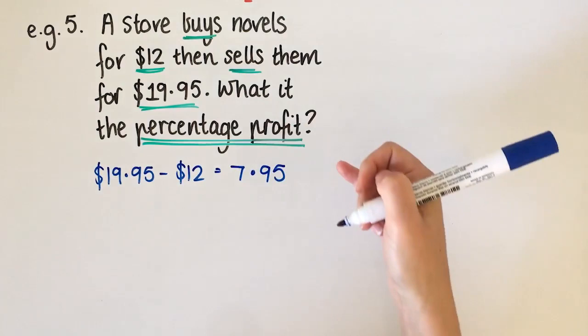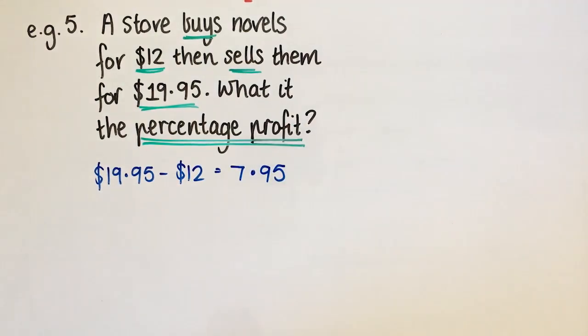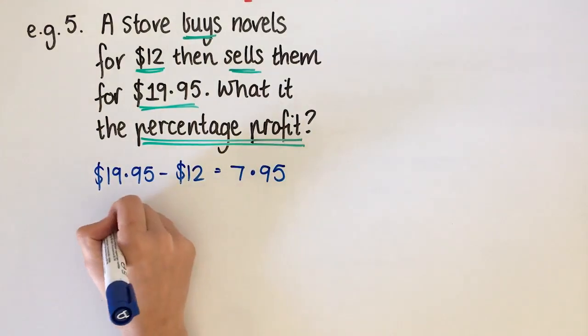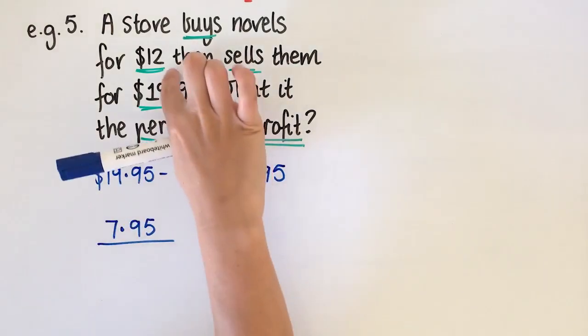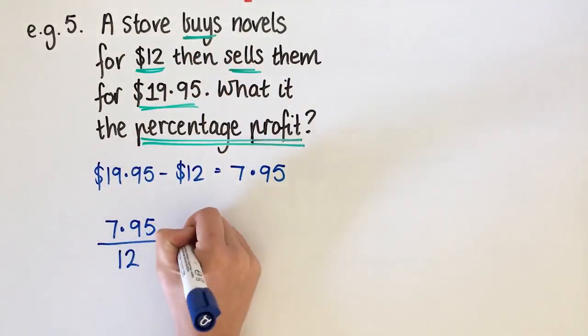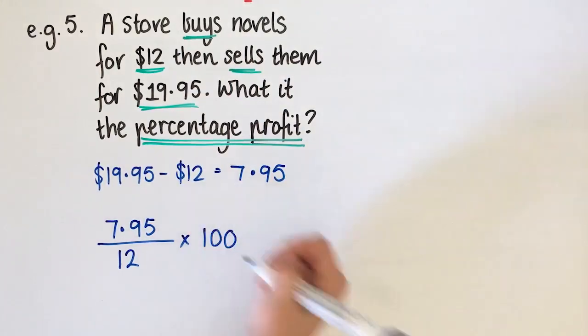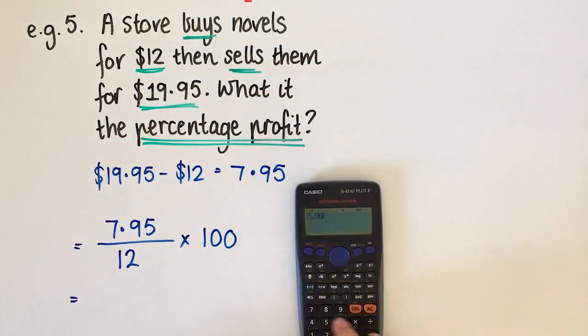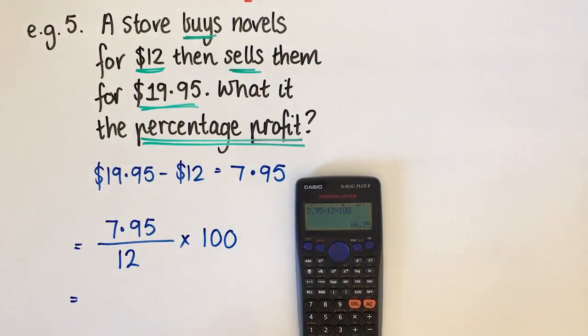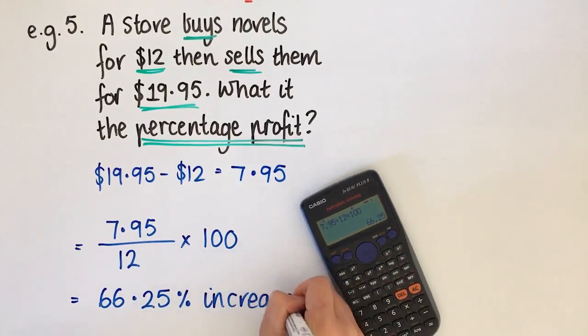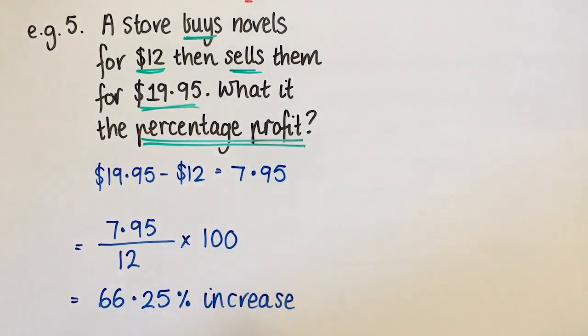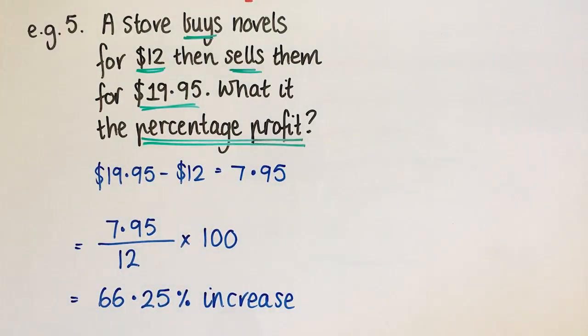So that's the dollar amount that it's changing. It's going up $7.95 every time. So then we need to put that dollar amount over the starting amount. The starting amount was 12. Then we're going to times it by 100 because that's how you get a percentage. So remember this means divided by, $7.95 divided by 12 times 100 is going to be 66.25% increase. Because the bookstore is making a profit, so they're increasing their price.